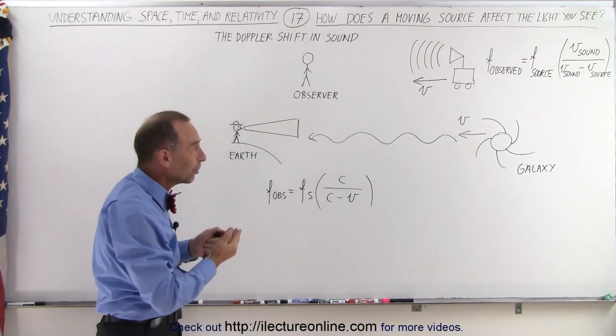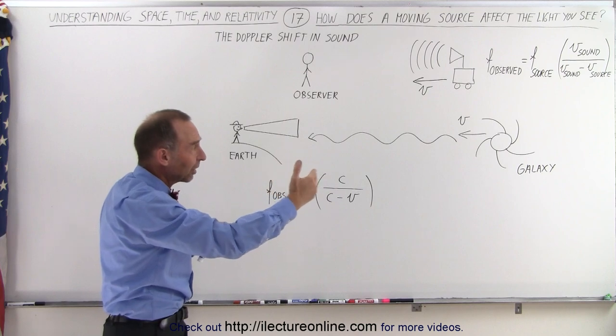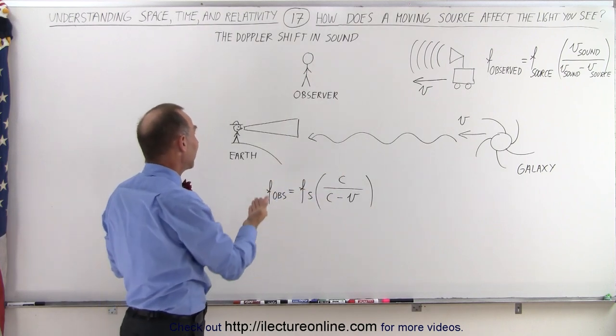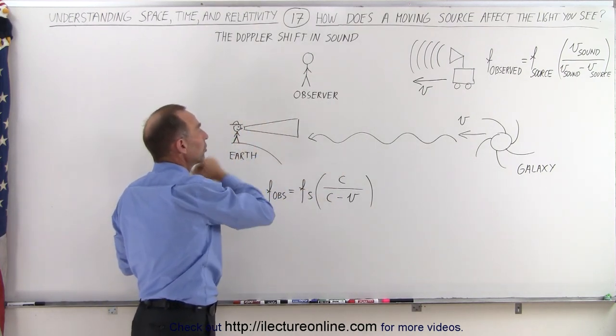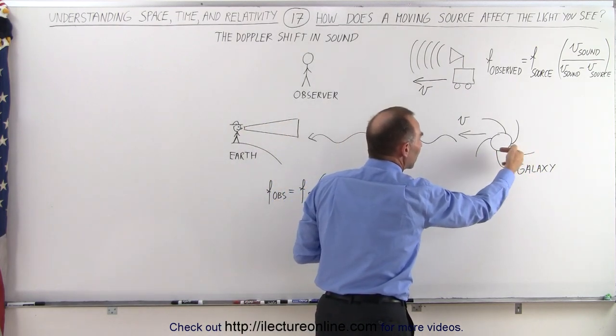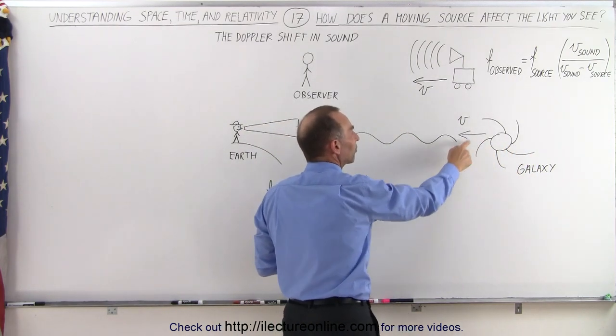So the question is, does the same thing happen to light as it comes from an object that approaches us? Let's say that we have an observer on the earth looking through a telescope looking at a galaxy that happens to be approaching towards the earth with a velocity v.